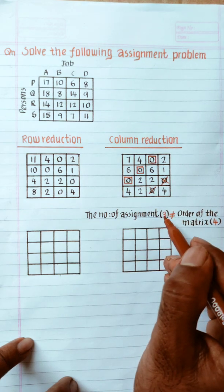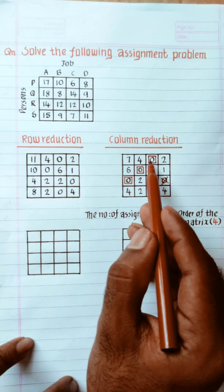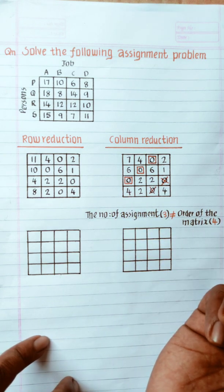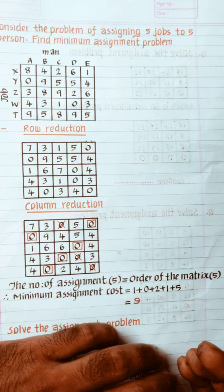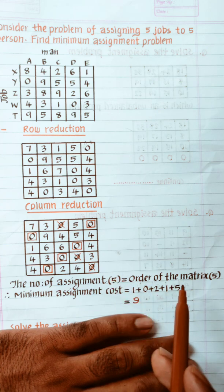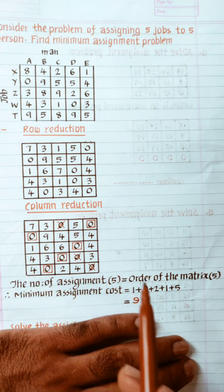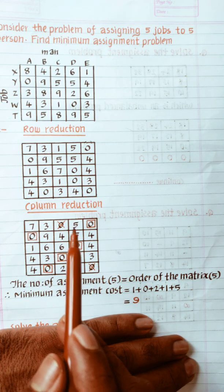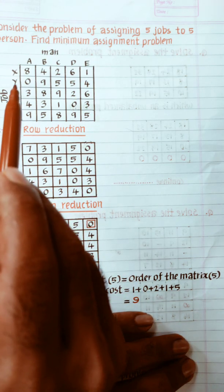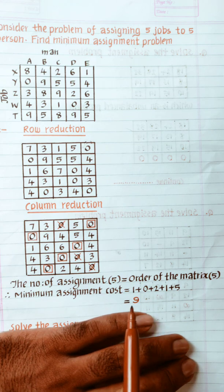This is the assignment order. The values are 9 points, 10 points, 6 points. Number of assignments is 5, but 5 is not the same as the order of the matrix. That is the minimum assignment cost. In this assignment, the values are: 1 plus this value, 0 plus this value, 2 plus this value, 1 plus 5. That is the total assignment cost.